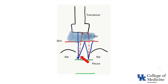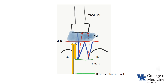The original ultrasound beam also bounces, or reverberates, between the skin and the pleura, as shown by the red arrow. Some portion of the reverberated beam is also reflected to the transducer, as shown by the pink arrow. Because the reverberated signal takes approximately twice as long as the reflected signal from the original beam, a reverberation artifact (light green) appears at a depth approximately twice the distance between the skin and the actual pleura.